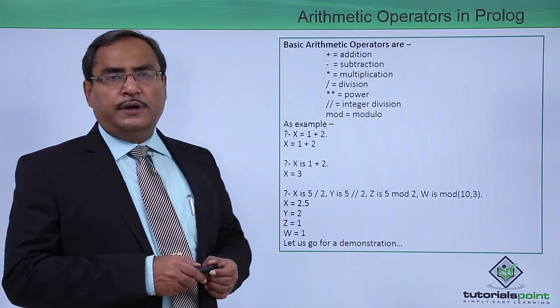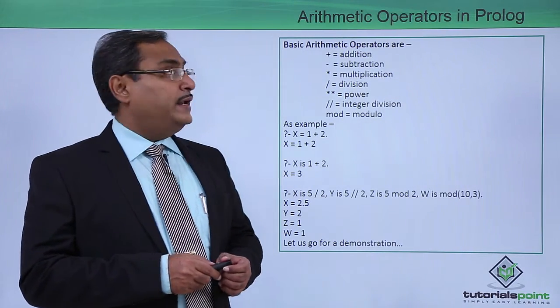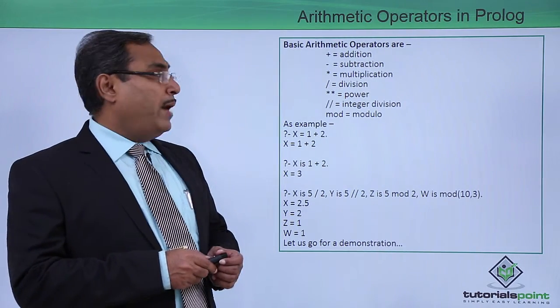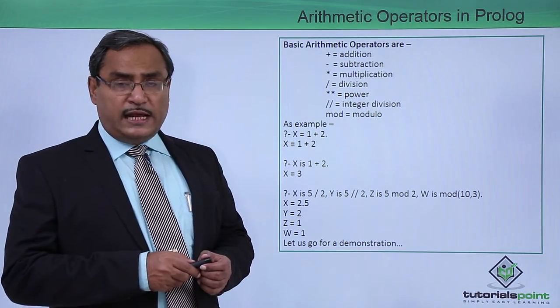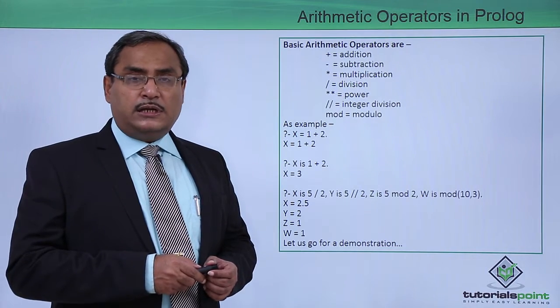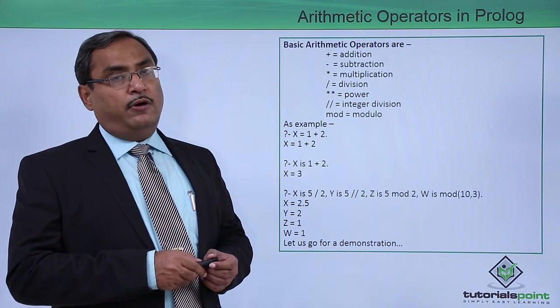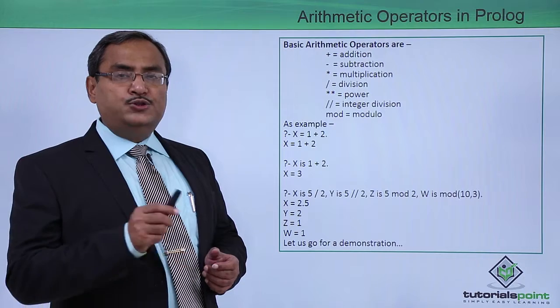Here is the list of basic arithmetic operators. Here we are having plus, minus, star, slash for division, double star or double asterisk is for exponentiation, that is to the power of.